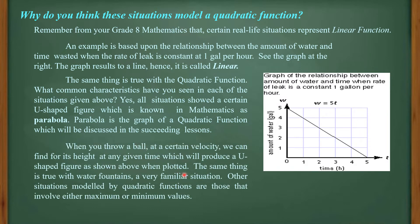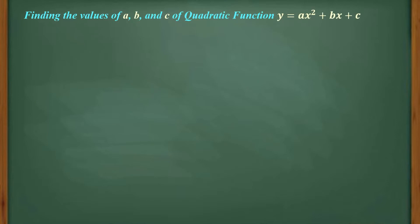When you throw a ball at a certain velocity, finding its height at any given time produces a U-shaped figure when plotted, as shown in the previous slide. The same is true with water fountains. Other situations modeled by quadratic functions are those involving either a maximum or minimum value, such as the profit example of a particular business. Now, how do we find the values of A, B, and C of a quadratic function y = Ax² + Bx + C?